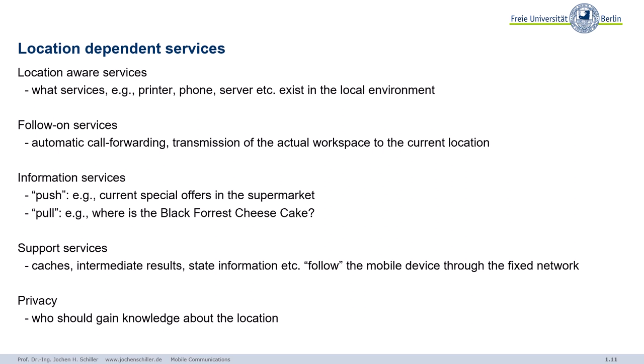There are also information services. We can distinguish between push and pull services. Push services — for example, early warning systems can push an alert to your mobile phone about what's happening around you, such as a disaster. Then there are pull services: where is the closest pharmacy, the next supermarket, or the nearest restaurant with at least four stars? These are typical information services.